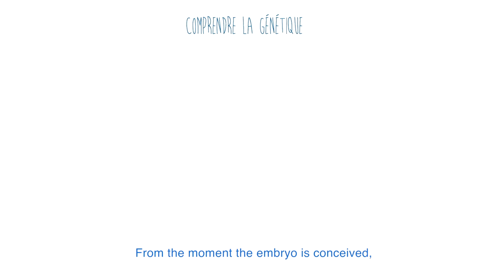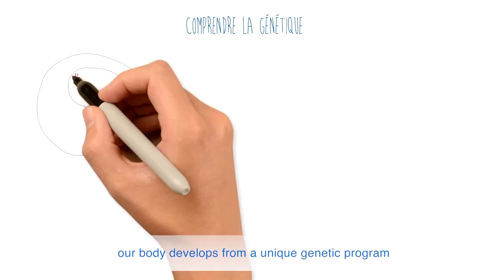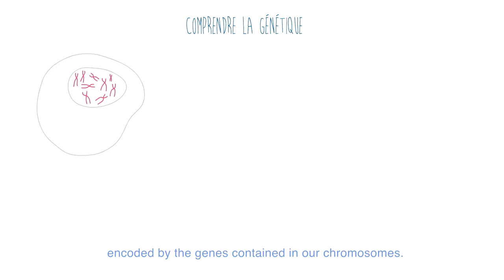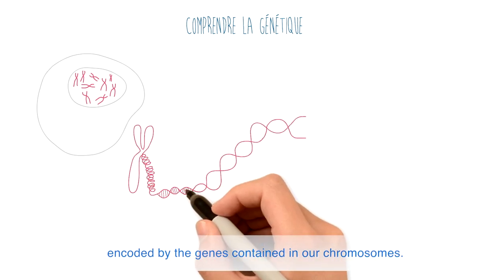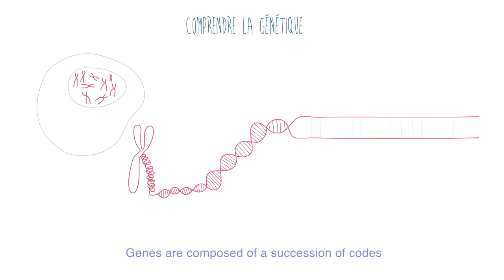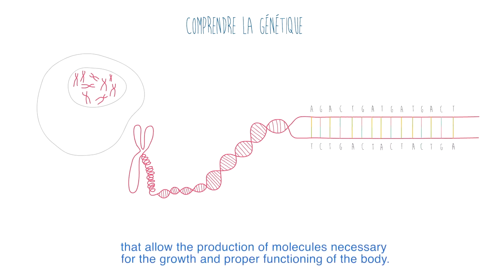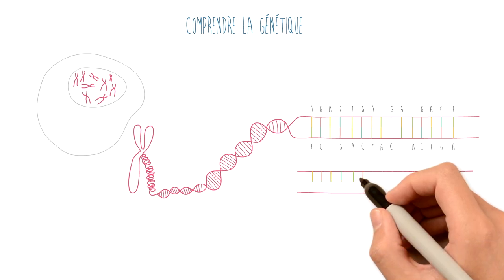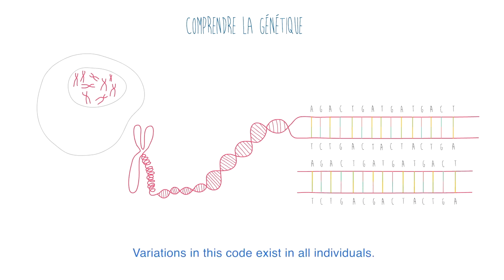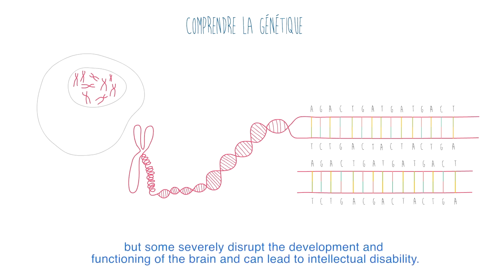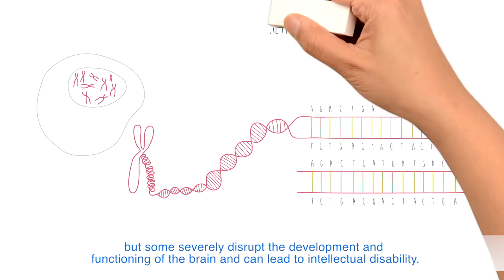From the moment the embryo is conceived, our body develops from a unique genetic program encoded by the genes contained in our chromosomes. Genes are composed of a succession of codes that allow the production of molecules necessary for the growth and proper functioning of the body. Variations in this code exist in all individuals — most of them are harmless, but some severely disrupt the development and functioning of the brain and can lead to intellectual disability.